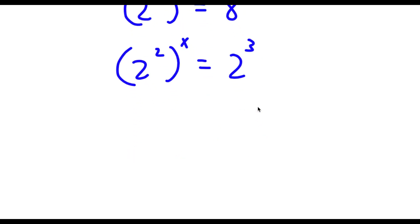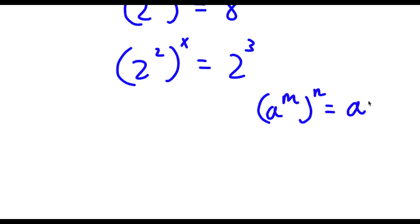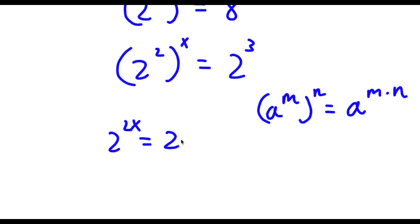Now if I have something in the form a to the power of m to the power of n, this is equal to a to the power of m times n. So 2 to the power of 2 to the power of x equals 2 to the power of 2 times x, which is 2x, and that equals 2 to the power of 3.